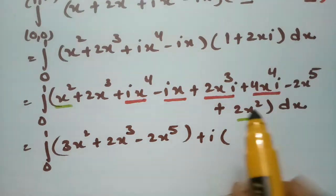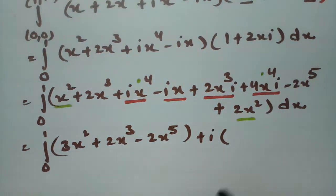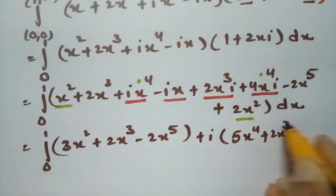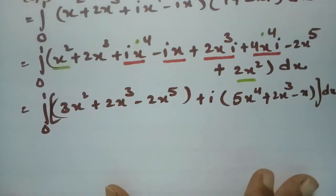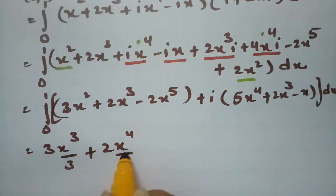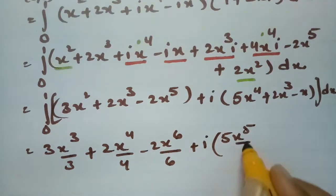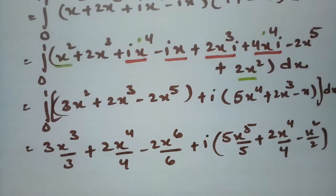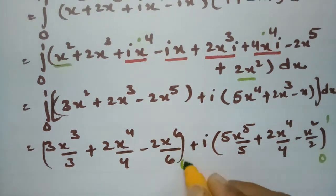So the integral from 0 to 1 is split into real and imaginary parts: integral of (3x² + 2x³ − 2x⁵) dx plus i times integral of (5x⁴ + 2x³ − x) dx, both from 0 to 1.